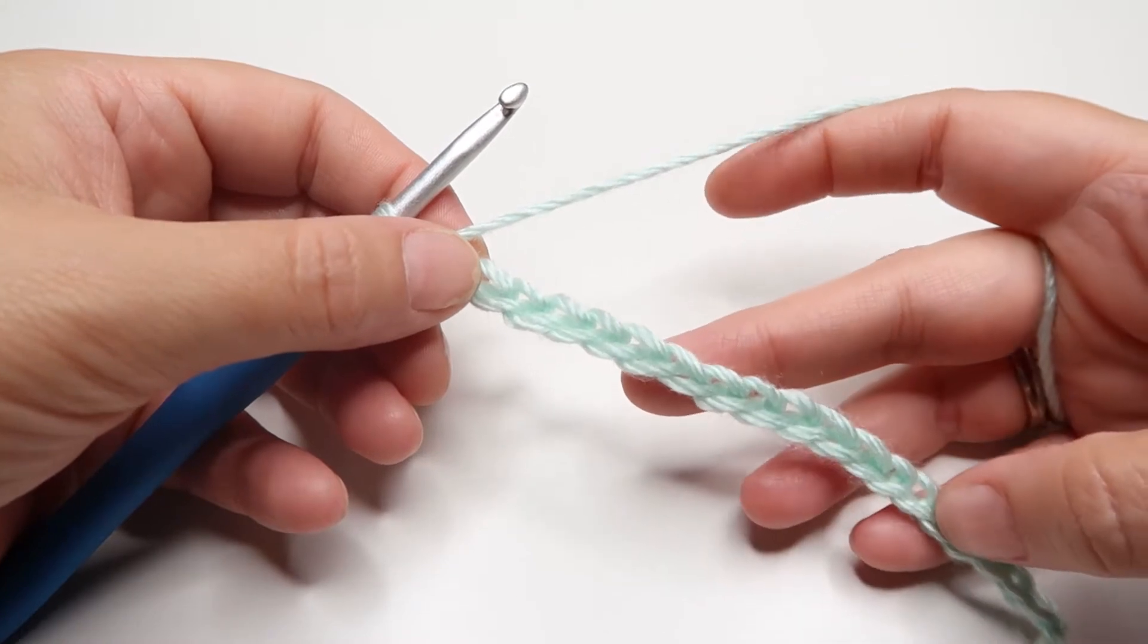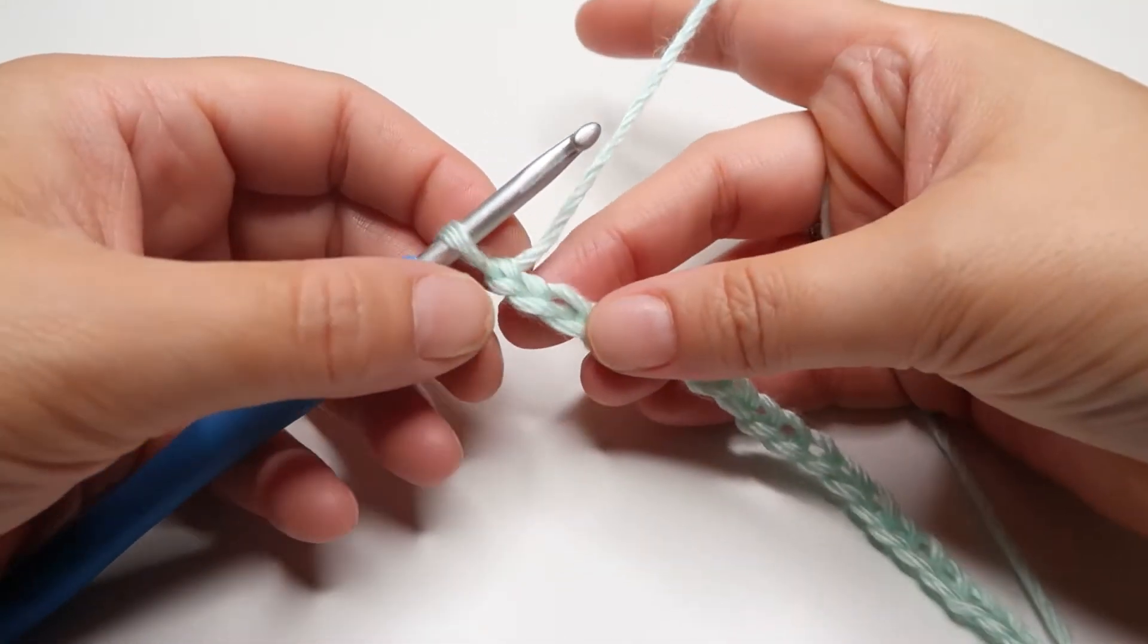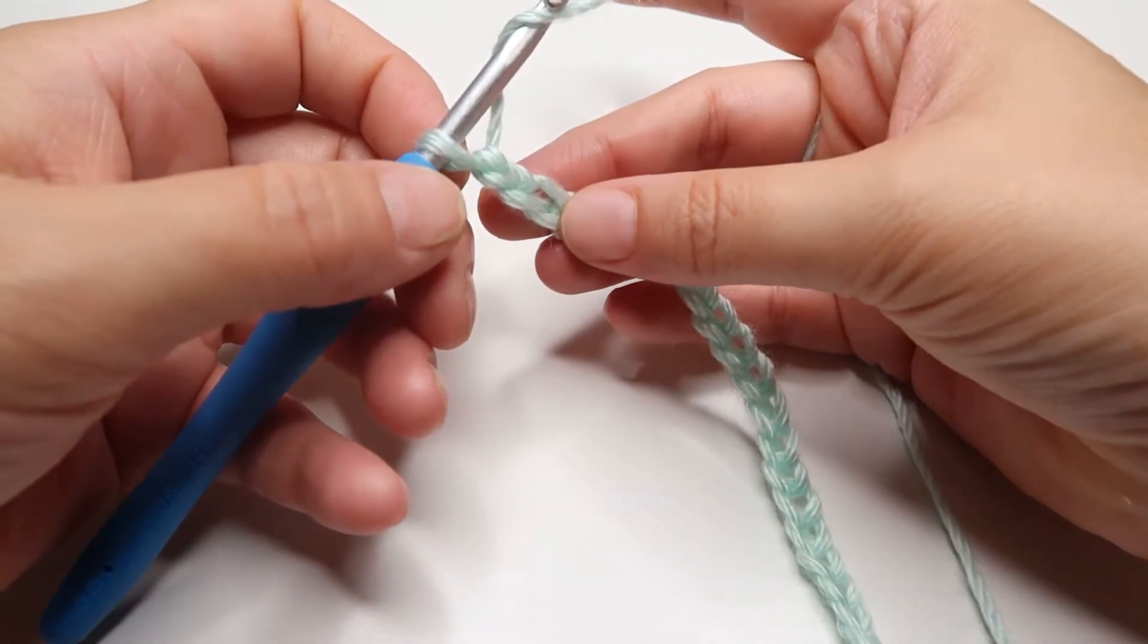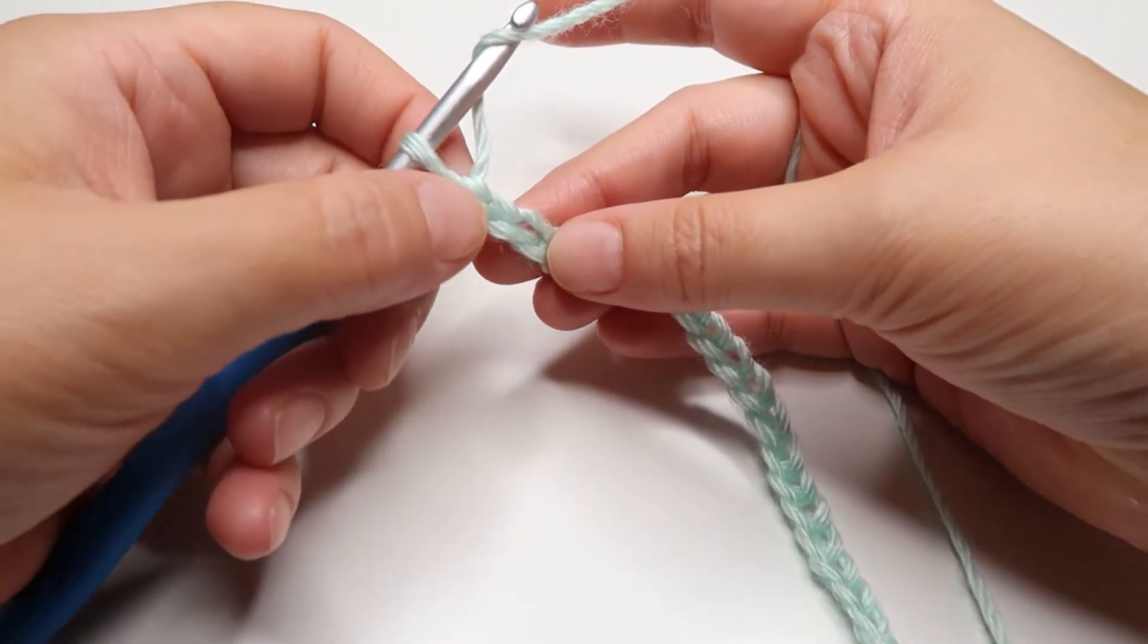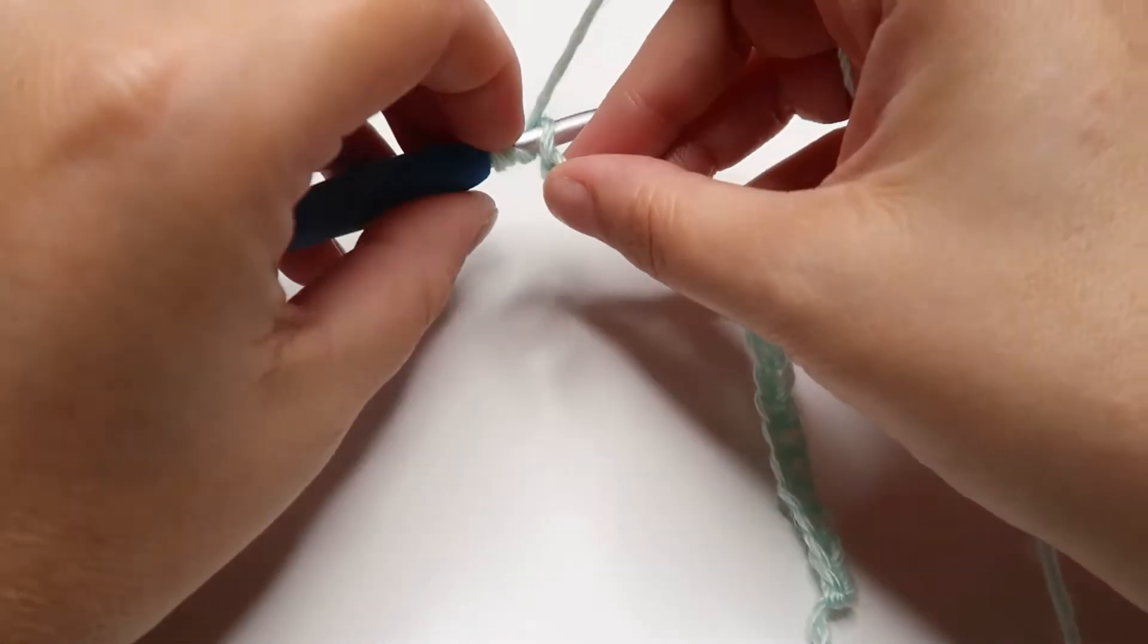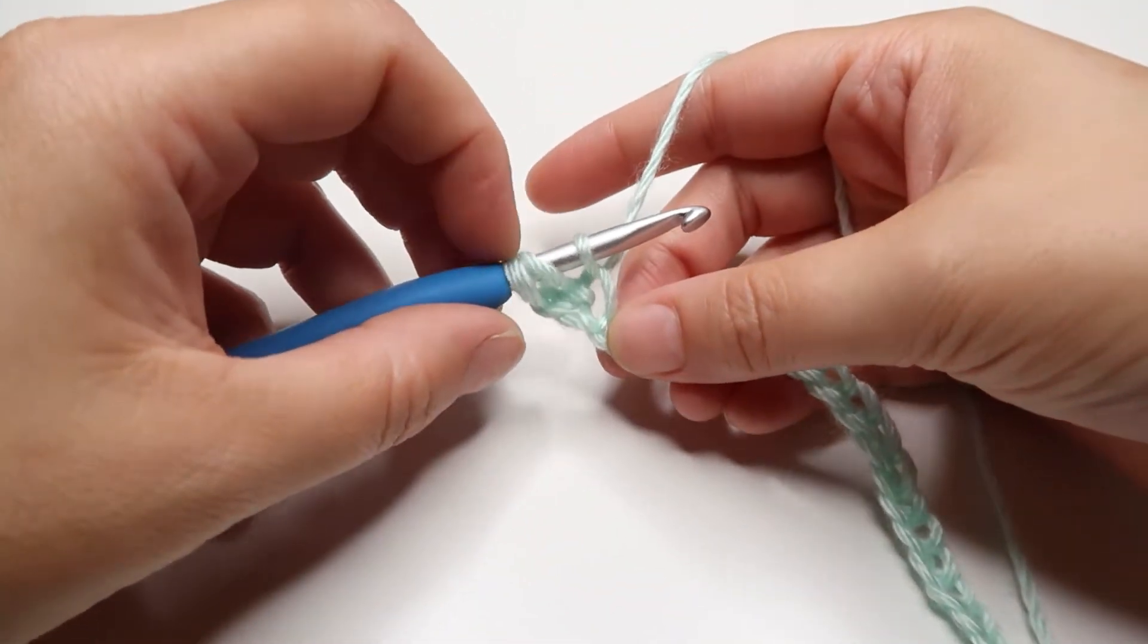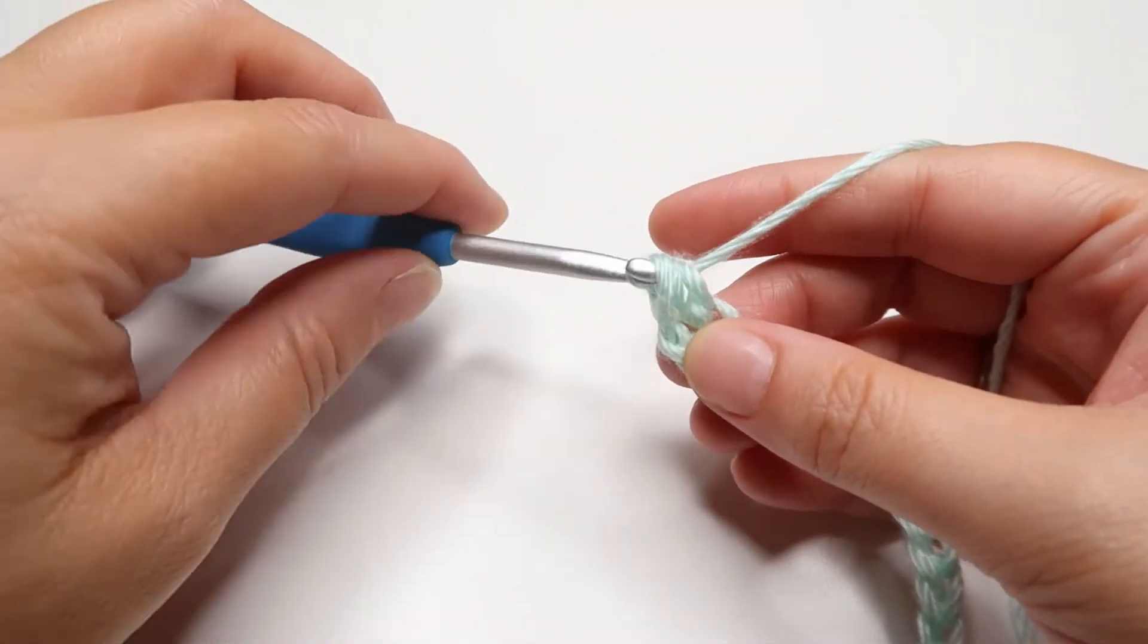For the half double crochet, I'm starting with a chain of 20. You're going to yarn over and insert your hook into the third chain from the hook, so you don't count this loop that's on your hook. You count down one, two, three. So yarn over, insert your hook, yarn over again, pull a loop through. You have three loops on your hook. Yarn over and pull through all three loops.